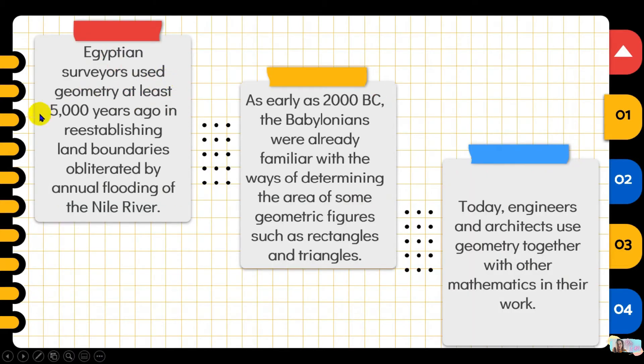Egyptian surveyors used geometry at least 5,000 years ago in reestablishing land boundaries obliterated by annual flooding of the Nile River. As early as 2000 BC, the Babylonians were already familiar with the ways of determining the area of some figures such as rectangles and triangles. Today, engineers and architects use geometry together with other mathematics in their work.